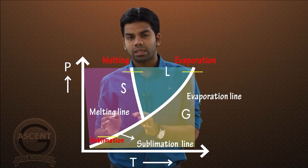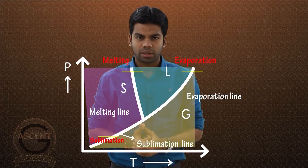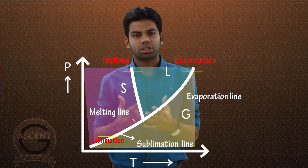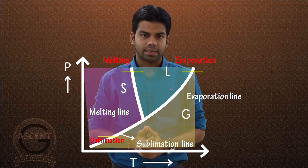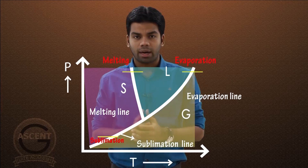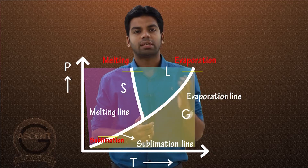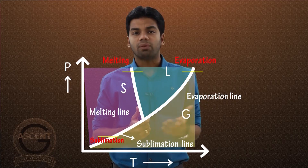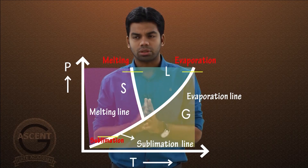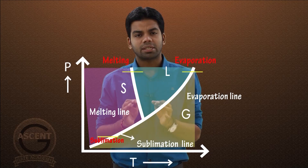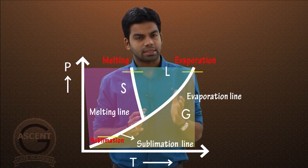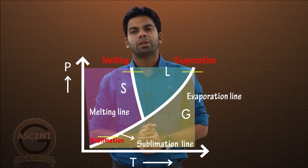For example, at normal atmospheric pressure the saturation temperature of water is around 100°C. If I increase the pressure to around 2 bar, the saturation temperature becomes 120°C. So as we increase the pressure, the temperature at which water boils also increases. This is the meaning of the positive slope.